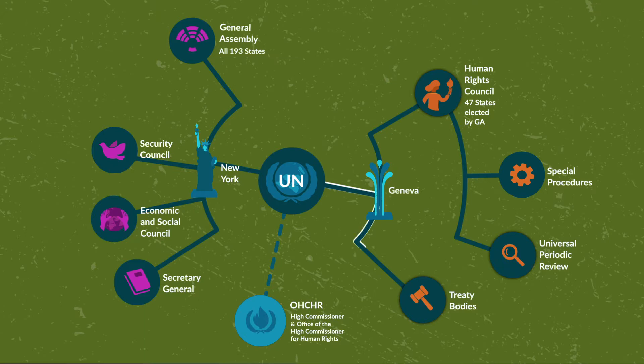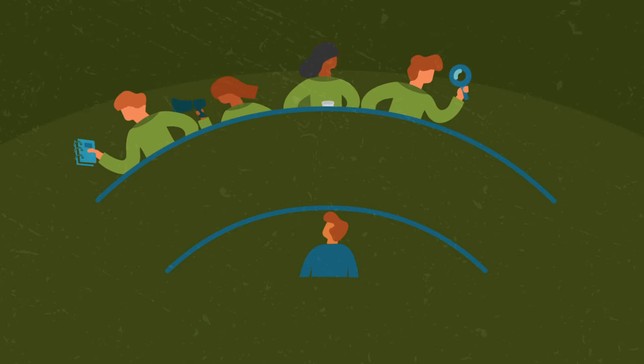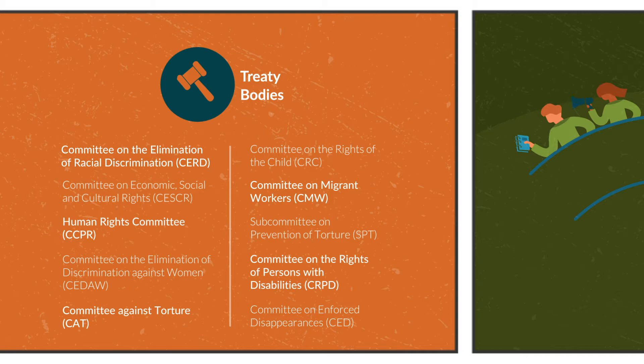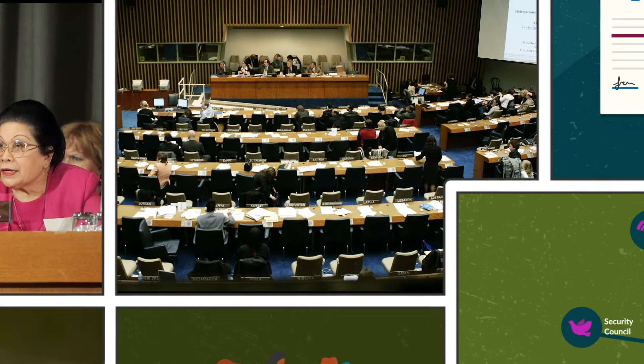The UN created the treaty bodies to monitor the implementation of these treaties on the ground. They are there to make sure that every country is living up to its responsibilities and obligations. There are ten treaty bodies, or committees, made up of independent international experts, varying in size from 10 to 25 members.